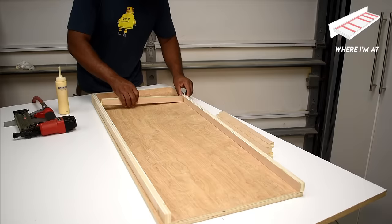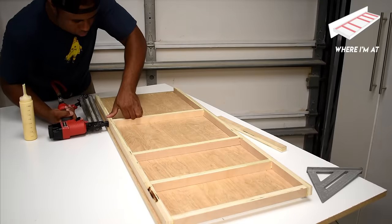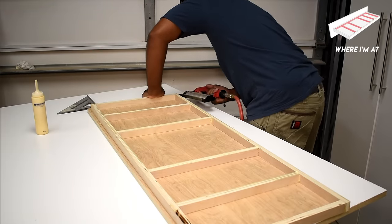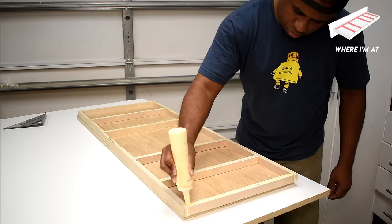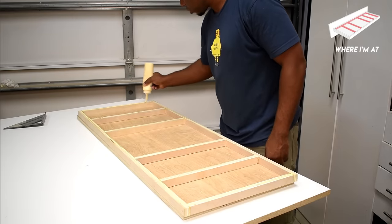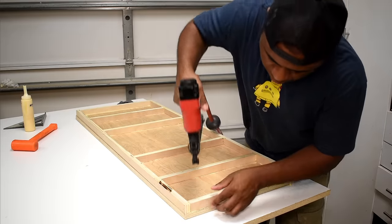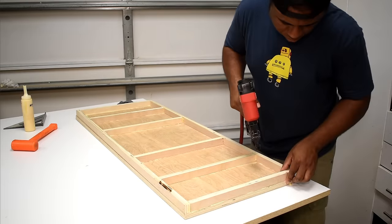Once everything was cut down to size, I'm going to build a frame that's going to support the desk. Most of this build will be constructed using wood glue and also a nail gun. After the frame was built, I then applied wood glue to secure it to the top. Once I had everything lined up, I used the brad nails to hold the frame down until the glue set up.